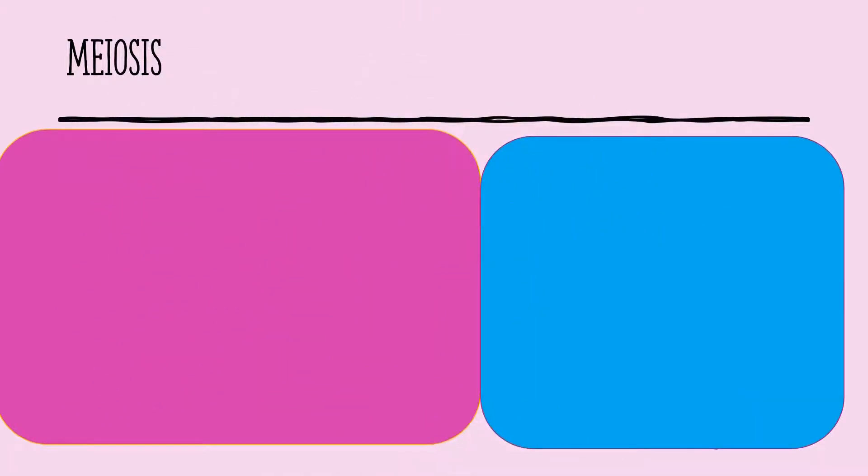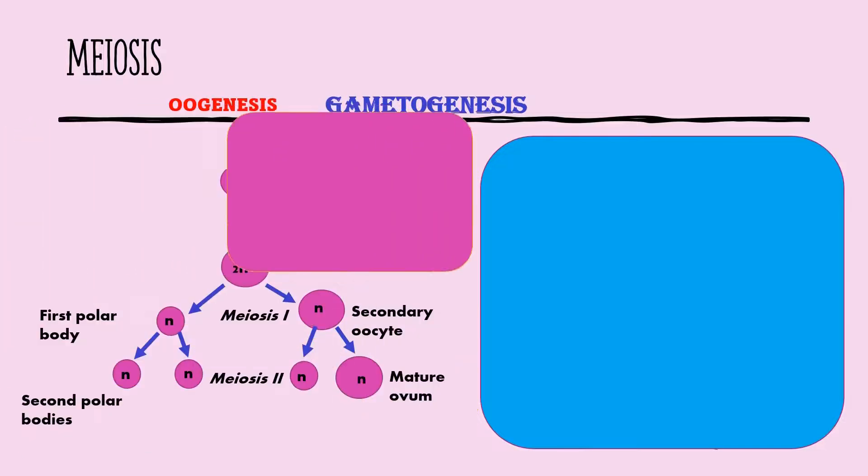Meiosis is used by multicellular organisms in the formation of reproductive cells or gametes. This process is called gametogenesis. Are you excited to find out how egg cells and sperm cells are produced? Oogenesis is the development of egg cells in the ovary. Let's take a look at the diagram.